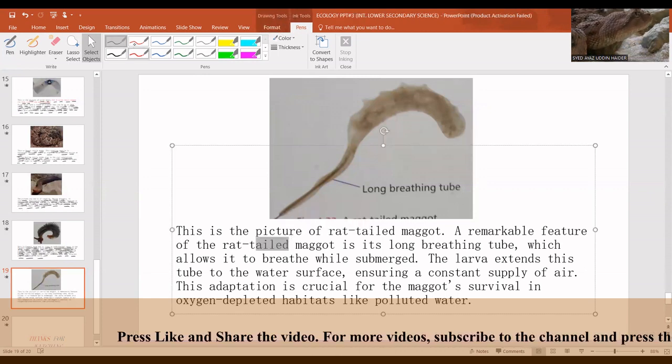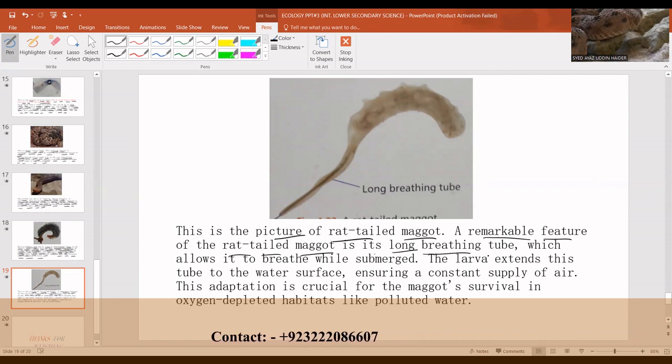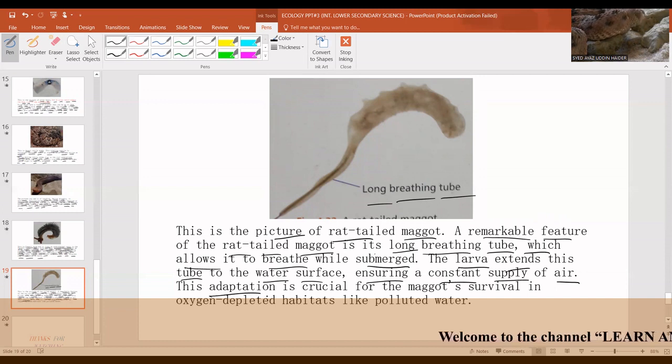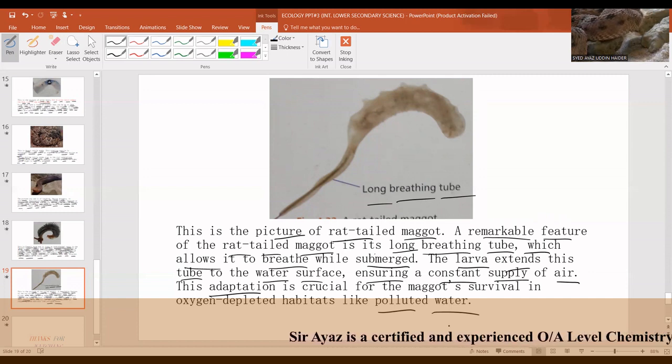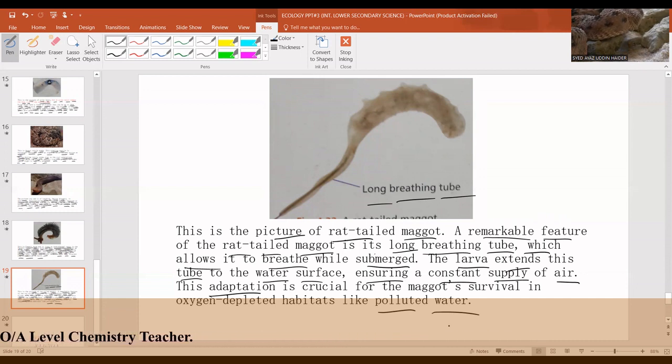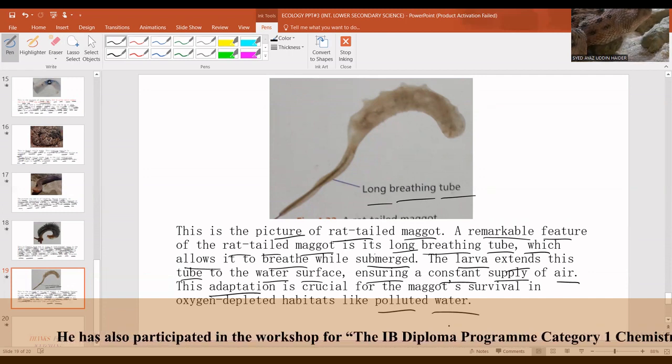This is the picture of rat-tailed maggot. A remarkable feature of the rat-tailed maggot is its long breathing tube. This long breathing tube allows it to breathe while submerged. The larva extends this tube to the water surface ensuring a constant supply of air. This adaptation by the rat-tailed maggot helps in crucial situations like when it's in polluted water because in polluted water there's a low level of oxygen. So the long breathing tube comes out of the polluted water and helps in taking oxygen from the air.